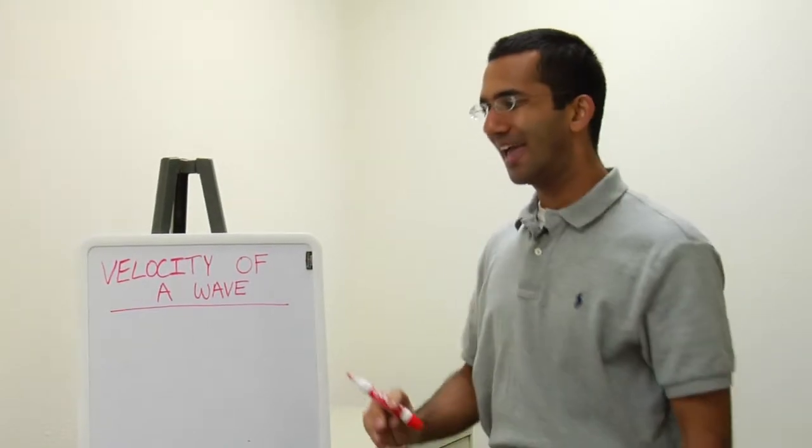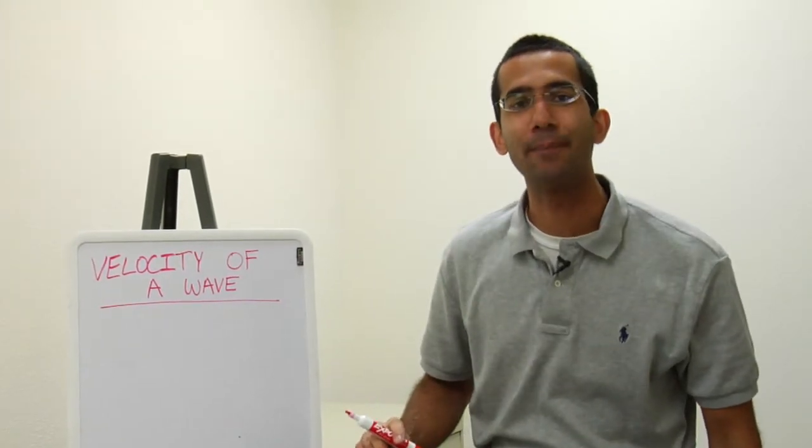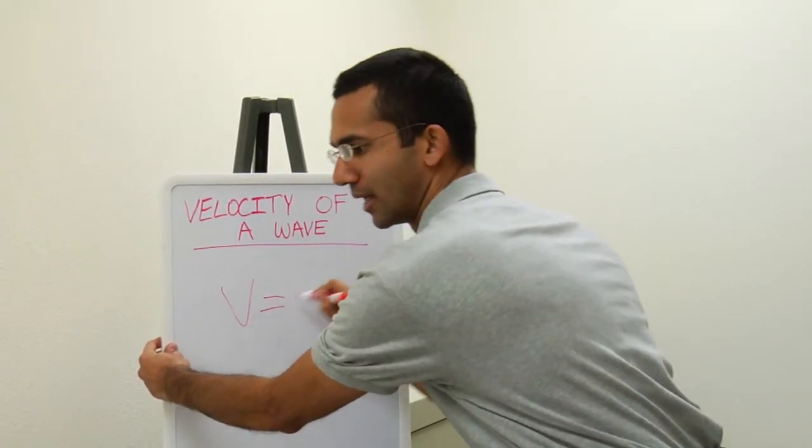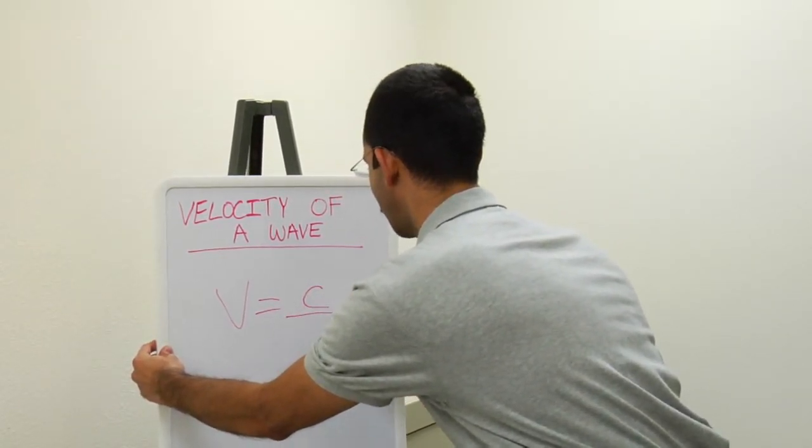The velocity of a wave in a given uniform medium is given by V equals C divided by N.